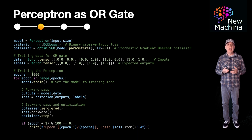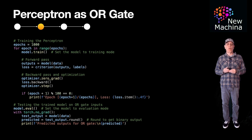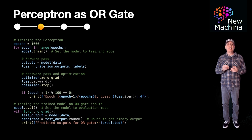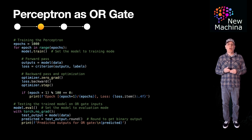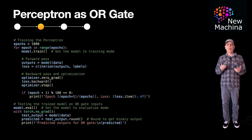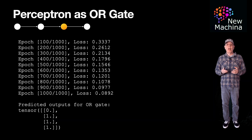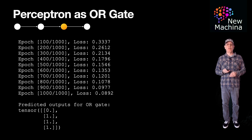After training, it's time to evaluate the Perceptron model. We move the model into evaluate mode. We then test the model by passing the training data. We get the predicted output and we print it out. And you can see from the results that our Perceptron model has been trained correctly and is behaving as an OR gate.